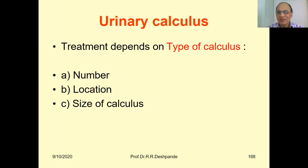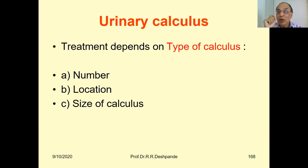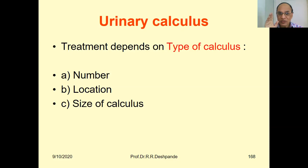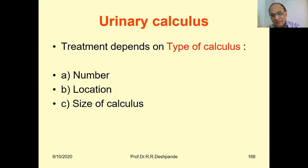When discussing urinary calculus — mutrakada in Marathi, mutrashAmari in Sanskrit — you must always mention three things: how many calculi there are (calculi is the plural), where they are located (kidney, ureter, or bladder), and the size. Size is the most important factor because the treatment depends on the size of the stone.